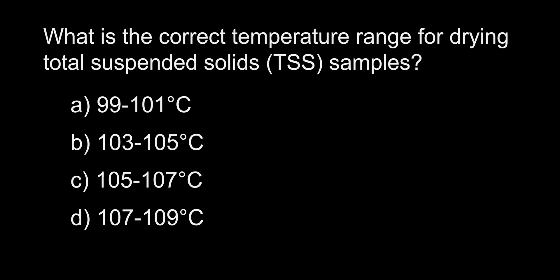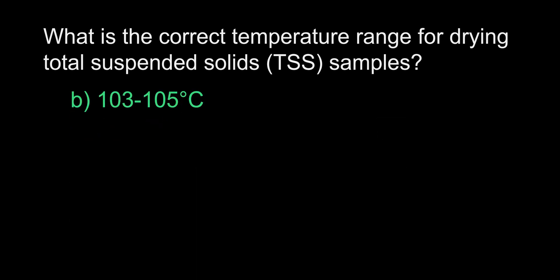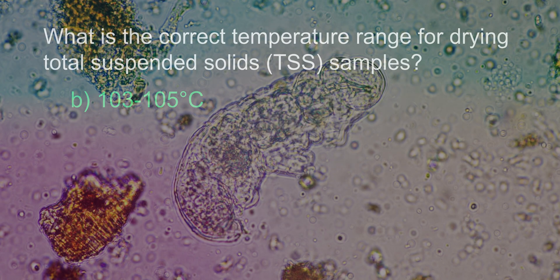What is the correct temperature range in degrees Celsius for drying total suspended solid samples? A. 99 to 101. B. 103 to 105. C. 105 to 107. D. 107 to 109. The answer is B. 103 to 105 degrees Celsius. For total suspended solids, the sample needs to be dried at a constant temperature range of 103 to 105 degrees Celsius for over an hour. This is based on the current standard methods for the examination of water and wastewater.